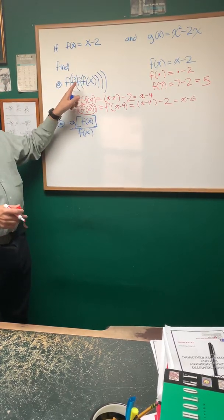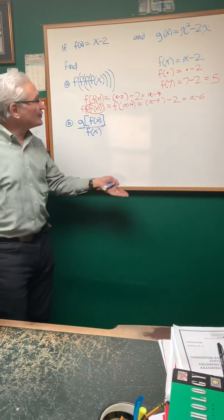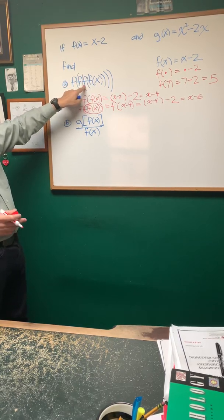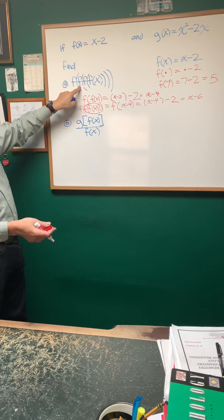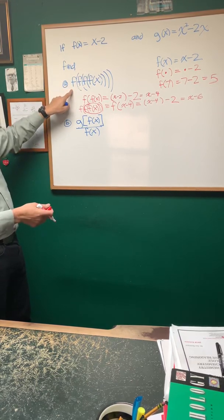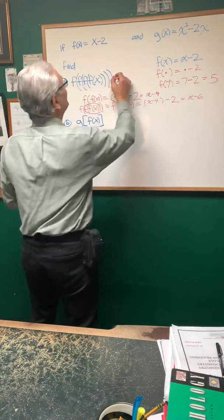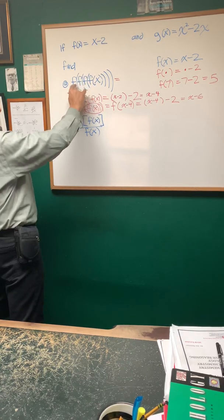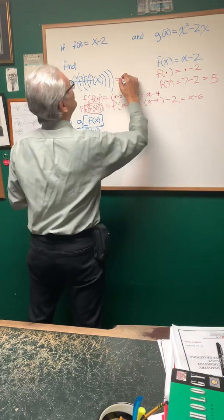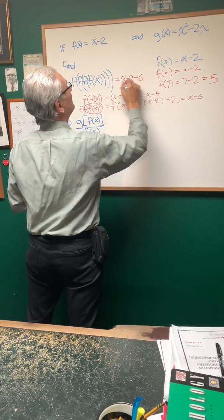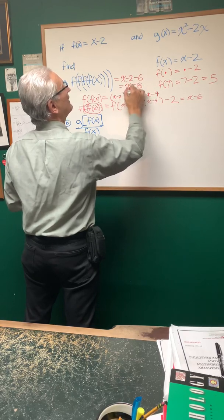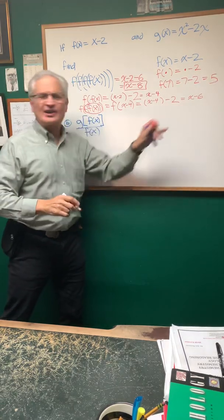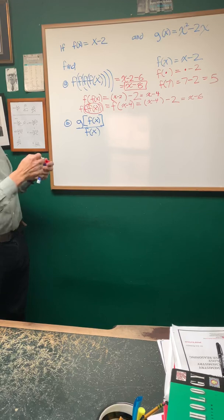Every time I apply the function f of x, I'm just subtracting another 2. I start with f of x equals x minus 2, applying it one time I subtract 2, a second time I subtract another 2, a third time I subtract a third 2. So succinctly, I'm taking the original function f of x and subtracting 2 three more times — subtracting 6 from it. So this is going to be x minus 2 minus 6, and the answer is going to be x minus 8.